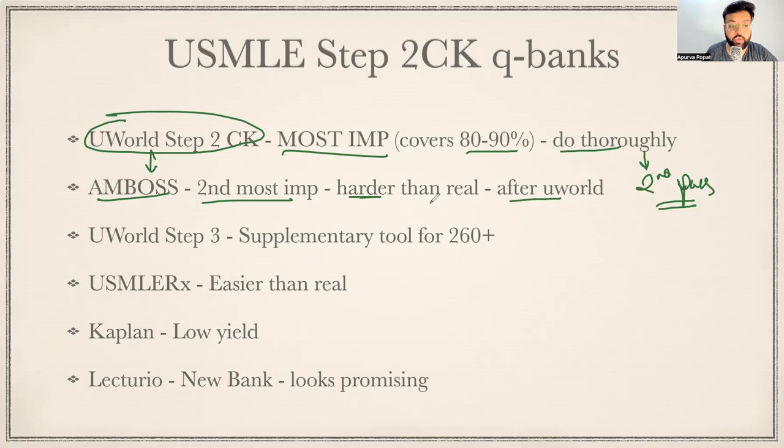AMBOSS is the second most important Q bank. Some of the questions are really harder than the real deal, but you can do it after you are done with thorough first pass of UWorld. Everybody also talks about doing UWorld Step 3 Q bank. I would regard this as a supplementary tool for someone who wants some edge or if you're not scoring good enough and you want 10-15 points boost, you can get some supplementary edge by solving Step 3 Q bank.